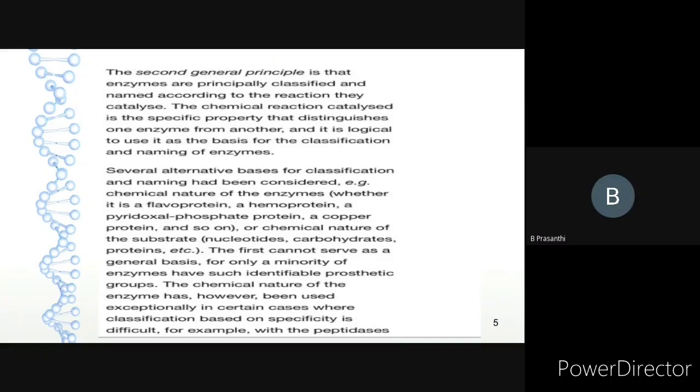Several alternative bases for classification and naming have been considered. For example, the chemical nature of the enzyme: whether it is a flavoprotein, a hemoprotein, a pyridoxal phosphate protein, a copper protein, and so on, or the chemical nature of the substrate. However, the first approach cannot serve as a general basis, as only a minority of enzymes have such identified prosthetic groups. The chemical nature of enzymes has been used exceptionally in certain cases.